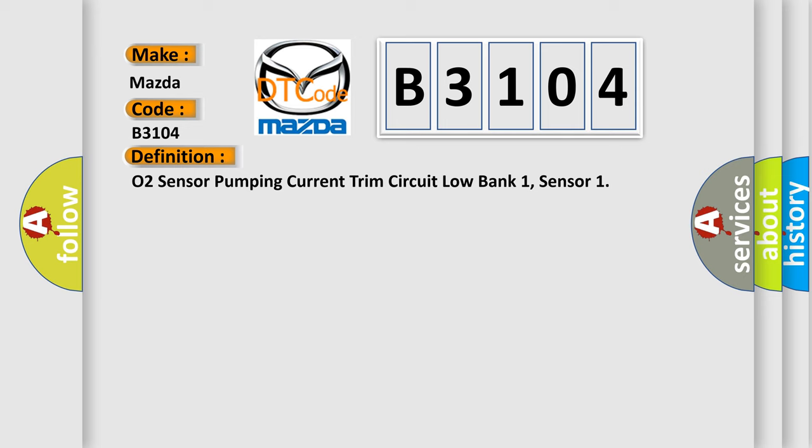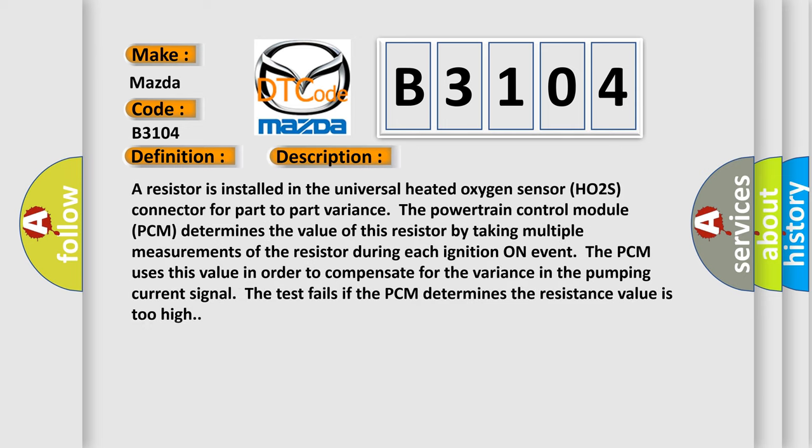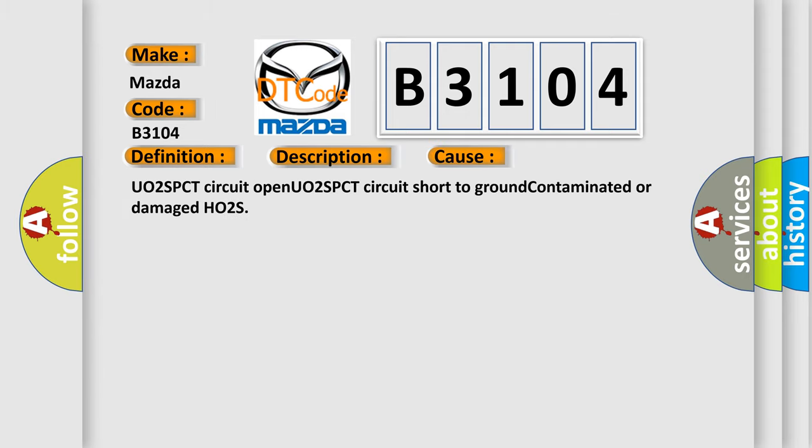A resistor is installed in the universal heated oxygen sensor (HO2S) connector for part-to-part variance. The powertrain control module (PCM) determines the value of this resistor by taking multiple measurements during each ignition-on event. The PCM uses this value to compensate for the variance in the pumping current signal. The test fails if the PCM determines the resistance value is too high. This diagnostic error occurs most often in these cases: O2 SPCT circuit open, O2 SPCT circuit short to ground, or contaminated/damaged HO2S. The Airbagreset website aims to provide information in 52 languages.